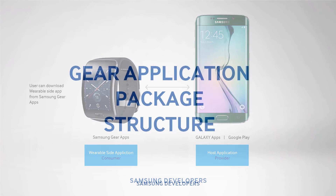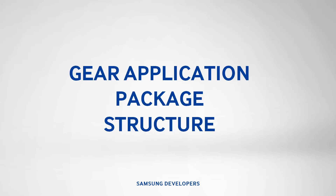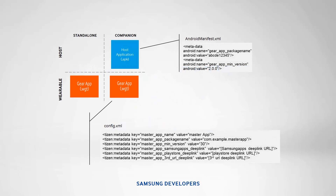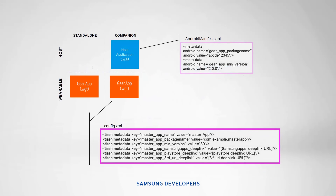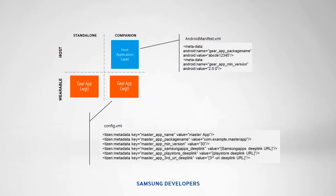The following shows the two gear app types and the relation between the host and gear apps. In order to create and install companion apps, the host-side app and the gear app must have each other's information. On the host-side, the gear app's info is added to the androidmanifest.xml. For the wearable side, the data is included in config.xml for WGTs. When users install an app, the following process happens.